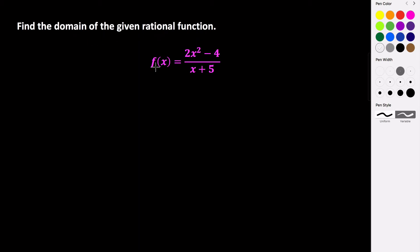In this problem, we are given the rational function f of x equals 2x squared minus 4, all divided by x plus 5. For rational functions, we know that it's a quotient of two polynomial functions, and all polynomial functions have a domain of all real numbers. However, for a rational function that's not the case, because whenever we have a fraction, the denominator is not allowed to be 0. So to find the domain restrictions for rational functions, we need to figure out what makes our denominator 0, and that's going to be the restricted values in our domain.